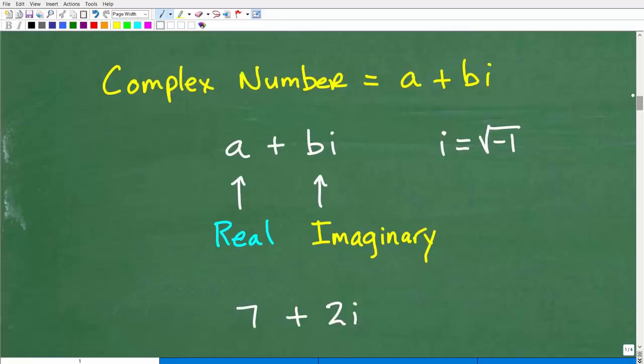So complex number is in the basic form of a plus bi. And complex numbers are a huge part of mathematics, especially more advanced math. I'm not going to get into like a full lesson on complex numbers. I'm just going to give you a quick introduction so we can answer this question what the square root of negative one is.